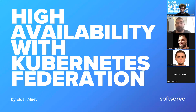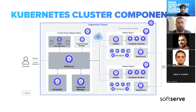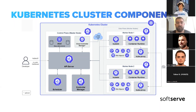Before we start with the federation topic, let's refresh our memory on how Kubernetes actually works and how the architecture of a simple Kubernetes cluster looks. This schema presents a simple cluster with two layers: a control plane and a data plane, along with the main components related to the control plane and worker instances.